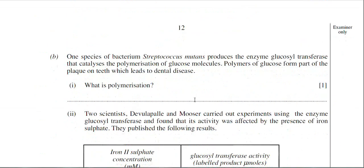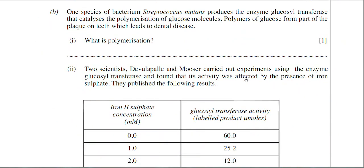Scrolling down to part B, this is where the examiner links carbohydrates with enzymes. There's a bacterium called Streptococcus mutans that produces an enzyme called glycosyl transferase. That enzyme catalyzes a polymerization reaction, adding glucose molecules together to form a polymer. Polymers of glucose form part of the plaque on teeth, which leads to dental disease.